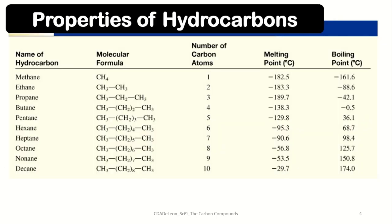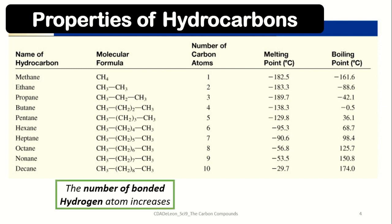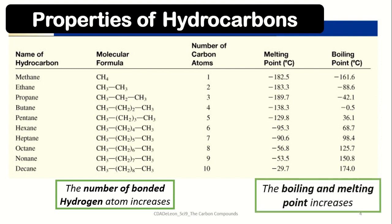As you can see in this table, we have the first 10 hydrocarbons based on increasing number of carbon atoms. Looking at the molecular formula and the melting and boiling points, we can observe that as the number of carbon increases, the number of bonded hydrogen atoms also increases. The melting and boiling points also increase as the number of carbon atoms increases.